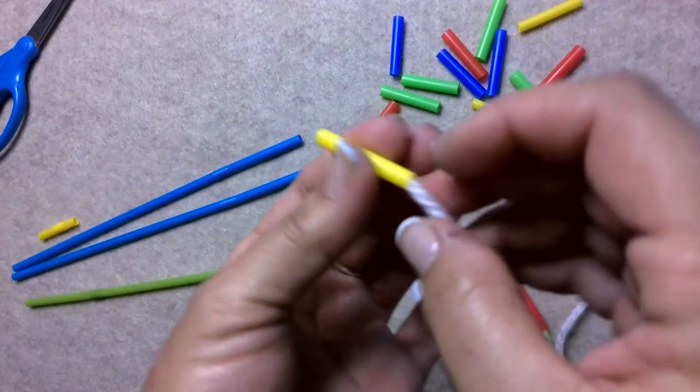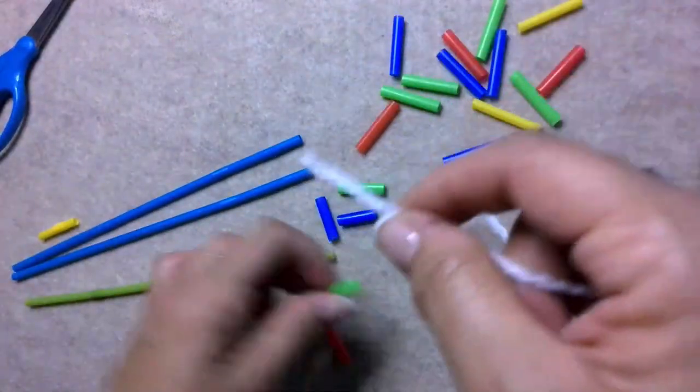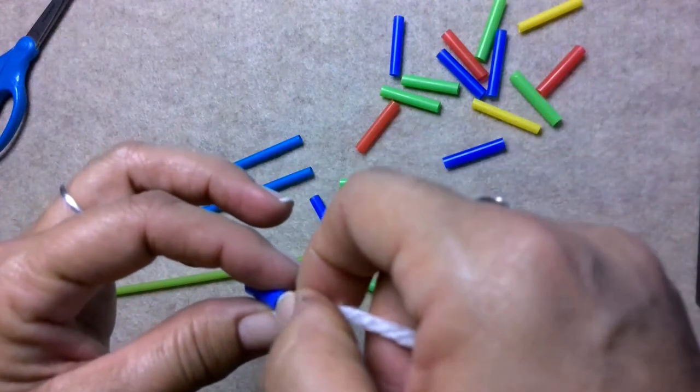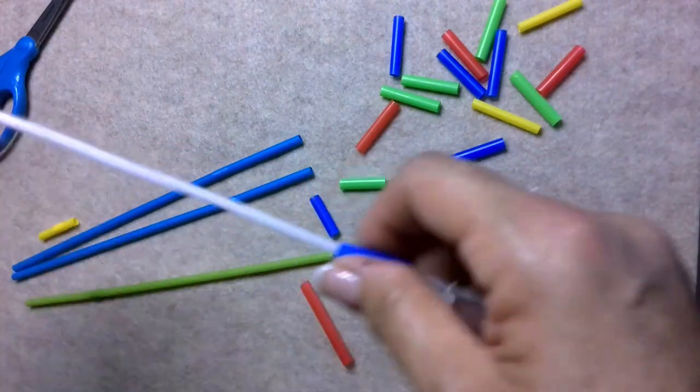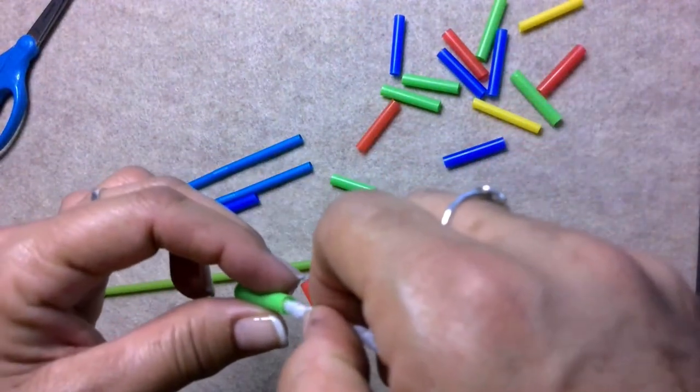And also, see, the longer the piece is, the harder it is for the yarn. The piece of the straw you have, it is harder for the yarn to go through.